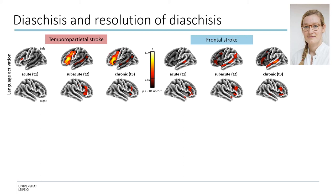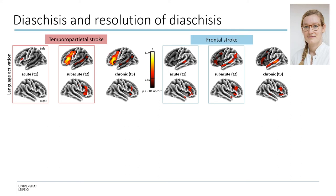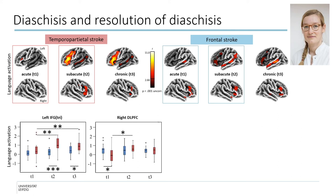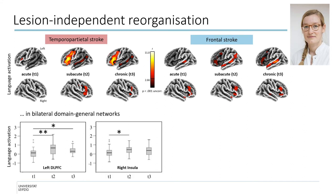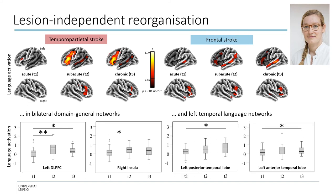In both groups, we found a global network disturbance in the acute phase characterized by reduced fMRI activation, also in areas distant to the lesion, that resolves in the subacute phase. This phenomenon, which we refer to as a resolution of diaschesis, was most pronounced in bilateral frontal cortex in patients with temporal parietal stroke. A general dynamic we observed independent of lesion location was that subacute reactivation of bilateral domain-general networks, for example in the dorsolateral prefrontal cortex and insula, precedes gradual reactivation in left hemisphere temporal language networks in the chronic phase.